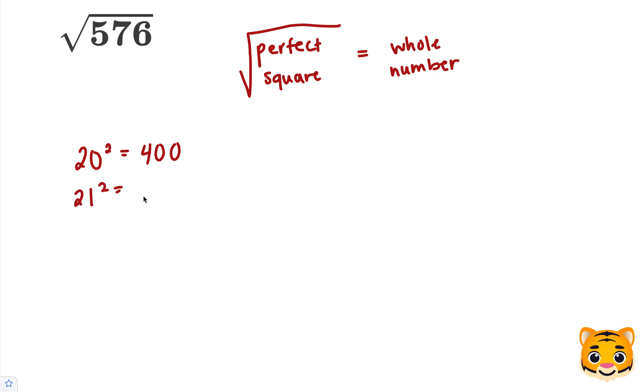21 squared gives us 441. Again, we are very far off from 576. 22 squared gives us 484. We're getting closer. 23 squared gives us 529.